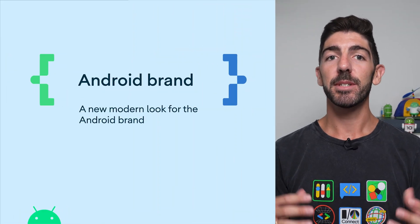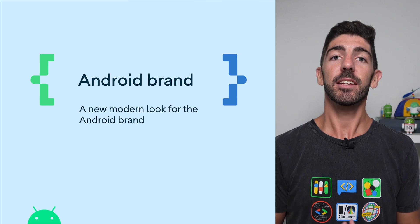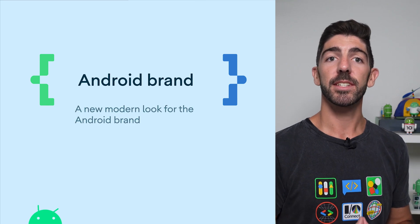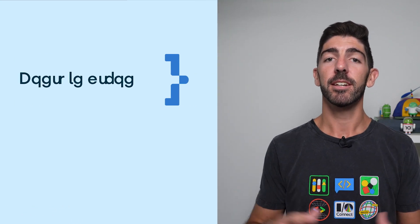Android is updating its visual identity that better represents our Android community, and reflects Android's core ethos of being open, iterative, and inclusive. The Android robot became a prominent fixture of our logo, and now we are giving Backdroid an entirely new 3D look.